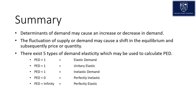To summarise: the determinants of demand may cause an increase or decrease in demand. The fluctuation of supply or demand may cause a shift in the equilibrium, and subsequently in price or quantity. There exist five types of demand elasticity which may be used to calculate PED, and these are shown once again below.